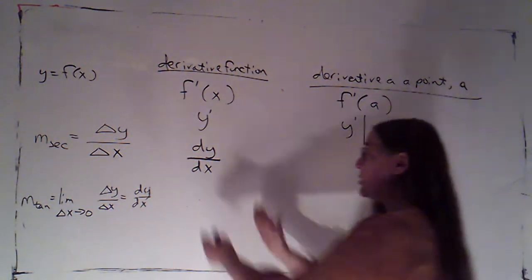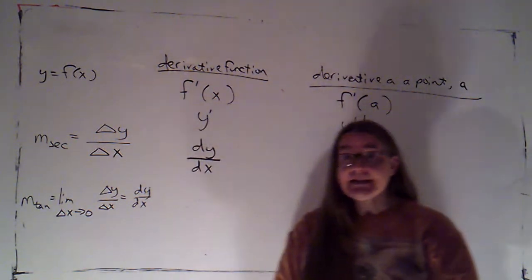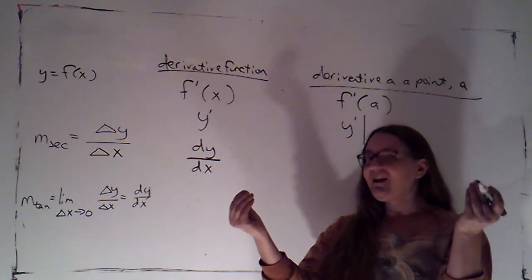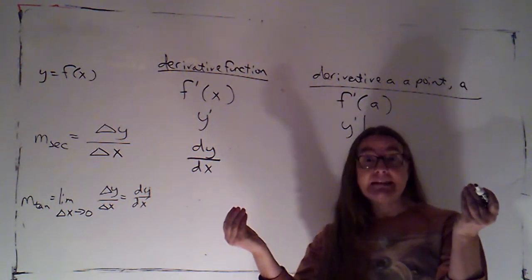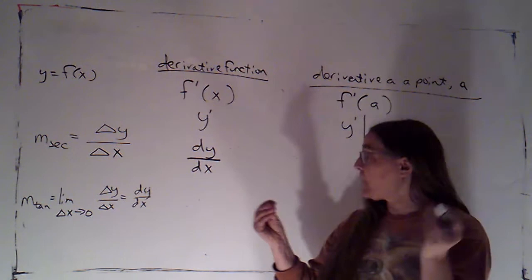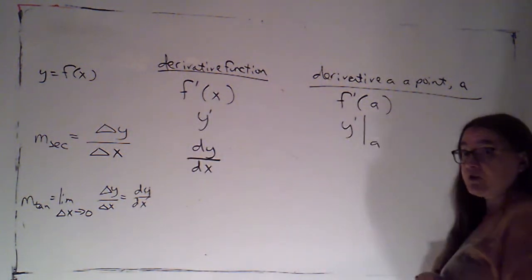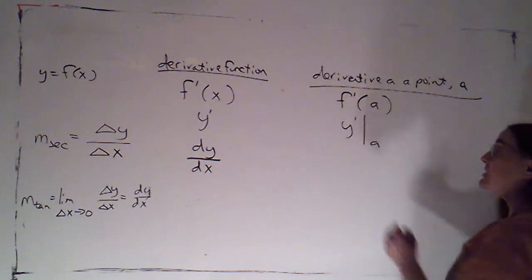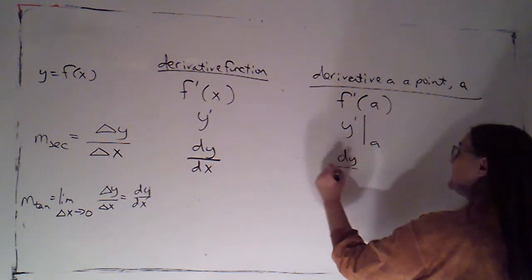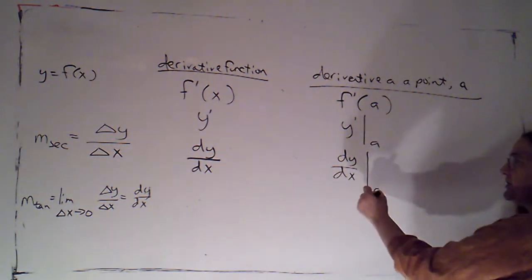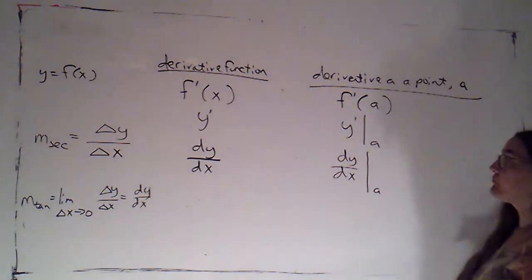For now, we're going to think of this as one symbol. It turns out that dy and dx do have some meaning on their own, and we'll talk about that later this semester. But for right now, this is one symbol. We're going to keep them together as one fraction. If I wanted to evaluate that at a point, since there's no place for my input here, I would simply write evaluated at a.